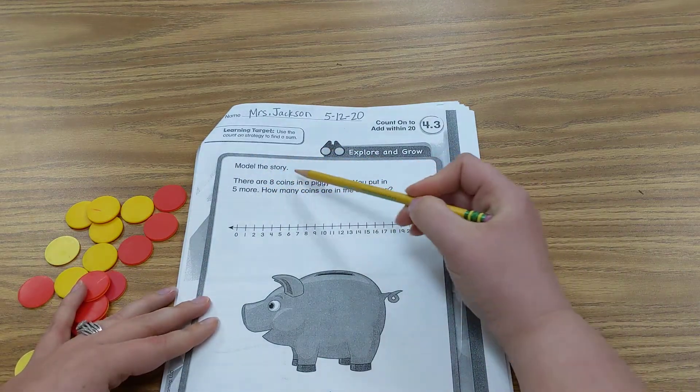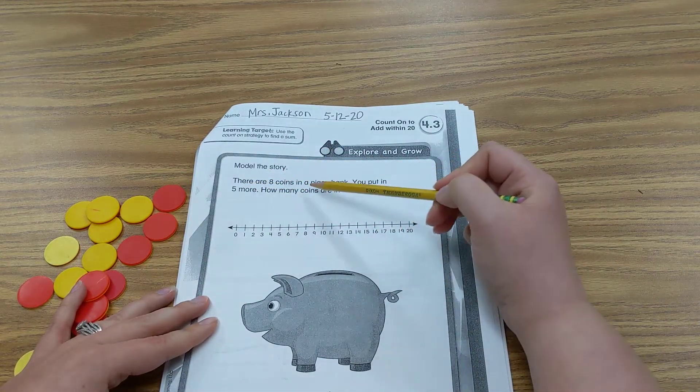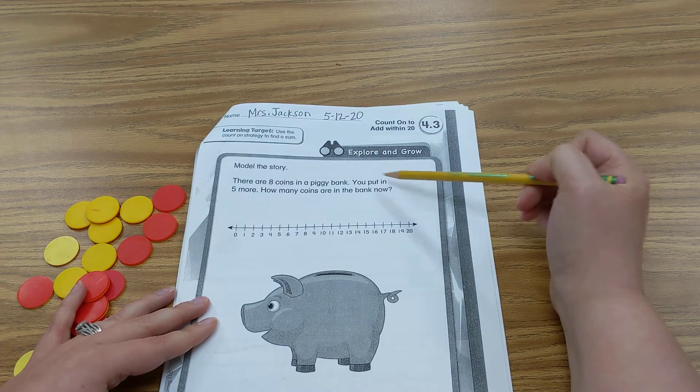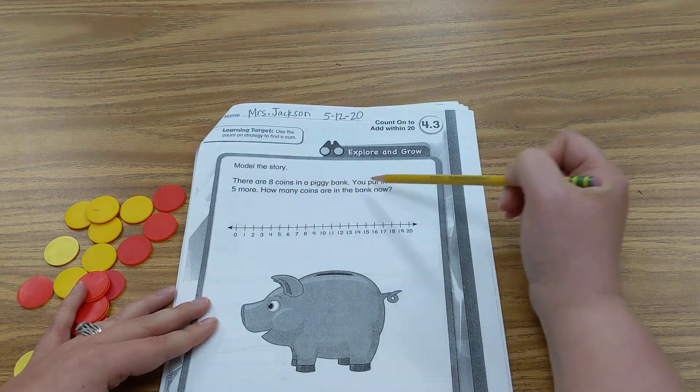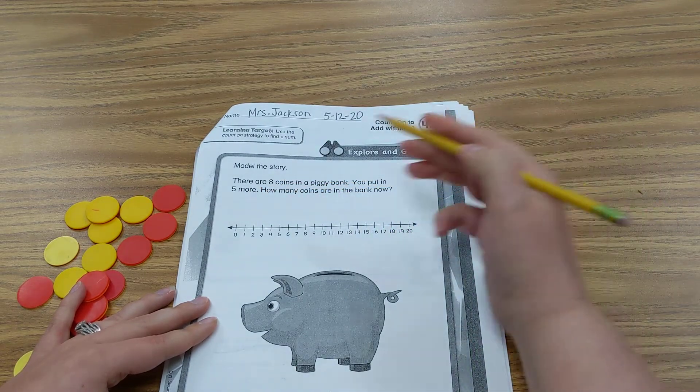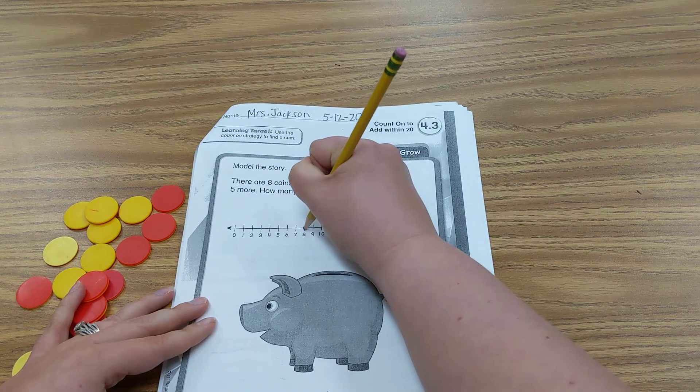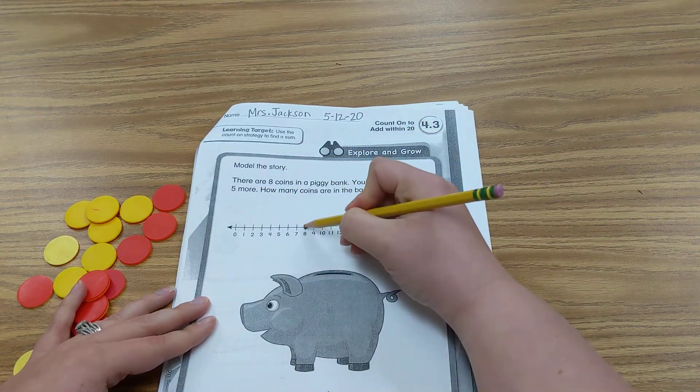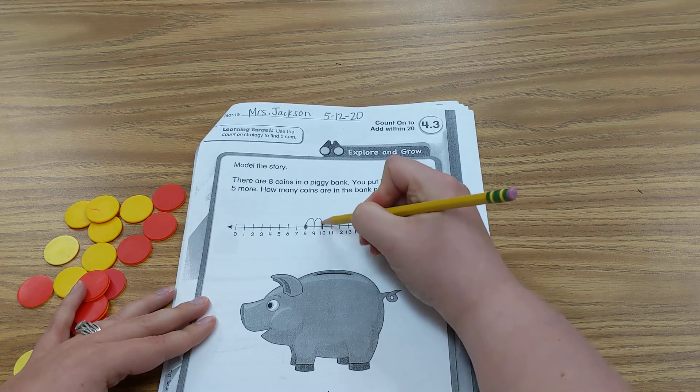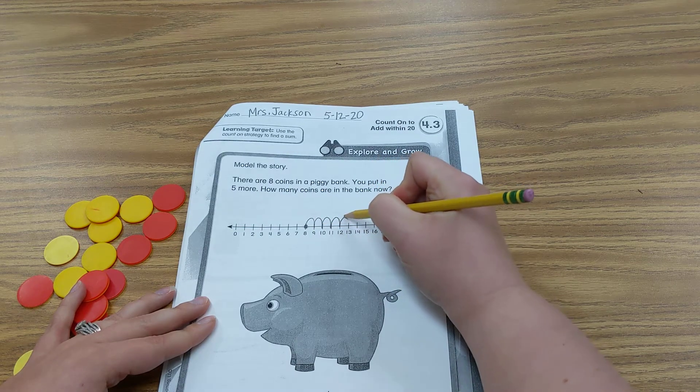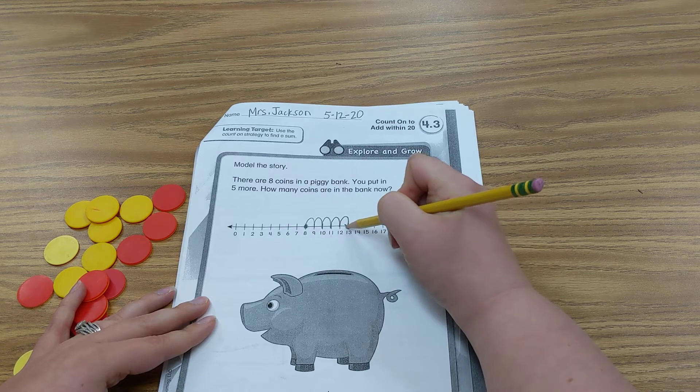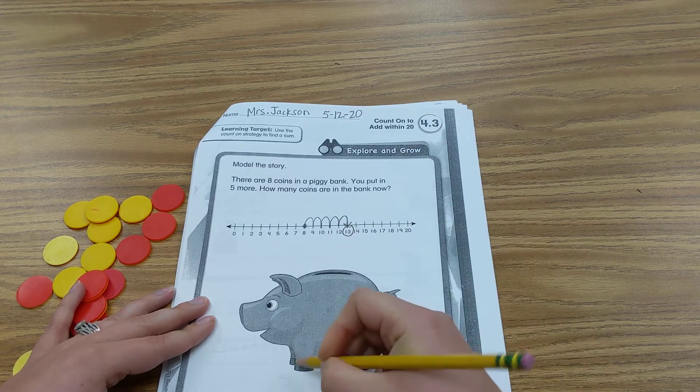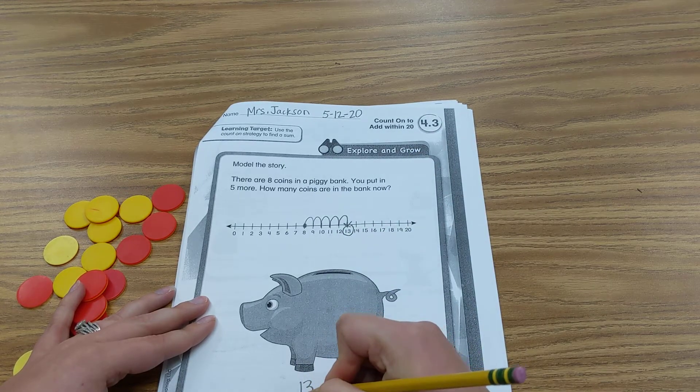Alright, model the story. There are 8 coins in the piggy bank. You put in 5 more. How many coins are in the bank now? So we need to start at 8 and jump 5 more. 1, 2, 3, 4, 5. So we have 13 coins.